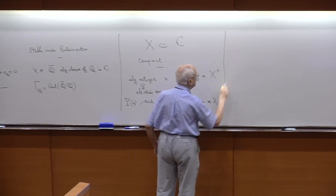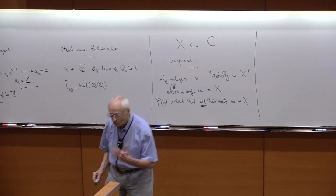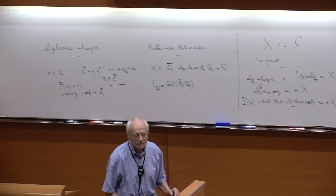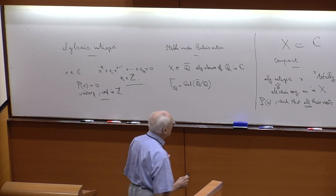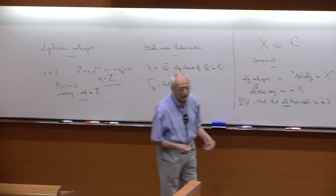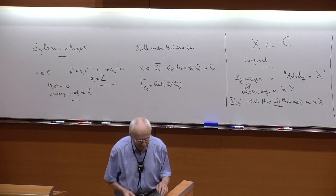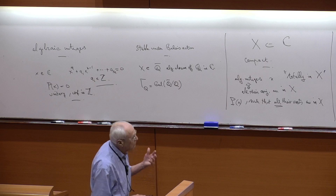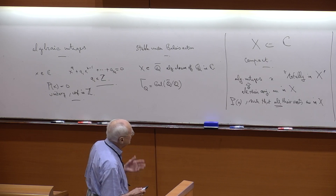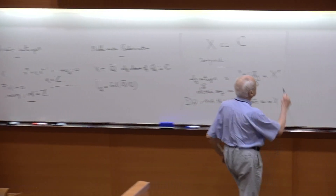We are going to see how these roots in X can be distributed. If we take an infinite set of such polynomials, what kind of distribution do we have? Before explaining that, let me give you a very standard example.